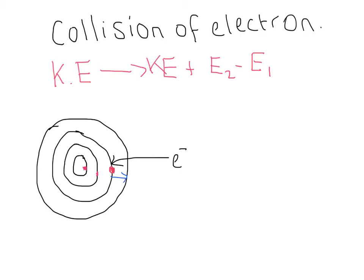And it can collide with one of the electrons. So it can collide with an electron inside it, which can cause it to move to a higher state. Or even if the electron has enough energy, it can cause it to move out of the atom completely and become ionized.